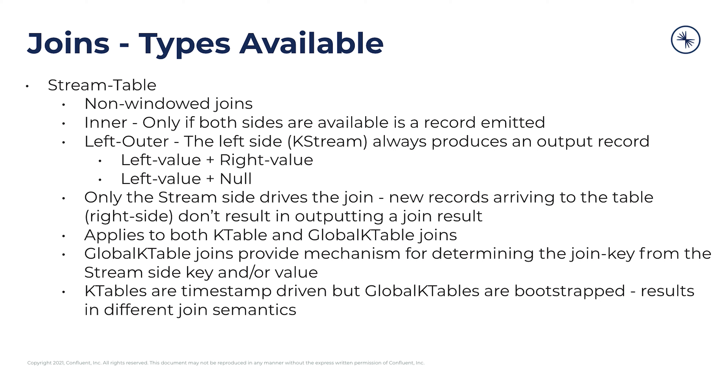The join itself is only going to produce an output if the left side has a value. So if a left record comes in, regardless of whether or not there is a matching value on the right side, an output will be produced. Whereas if an event comes in on the right side, there is only going to be an output produced if something matches on the left side. The stream-table join only defines an inner and a left outer join — there's no fully outer join. It's also non-windowed, which means only the stream side really drives the join. Only when new records come in on the stream side do we get output, and this is why there's only a left outer or an inner join — it just does not make sense to output a new record if you only get a new record from the right side.